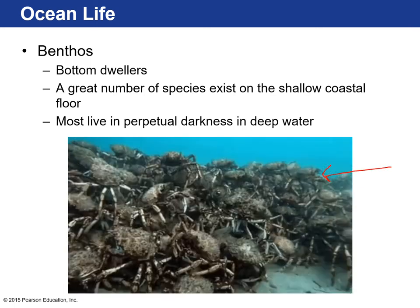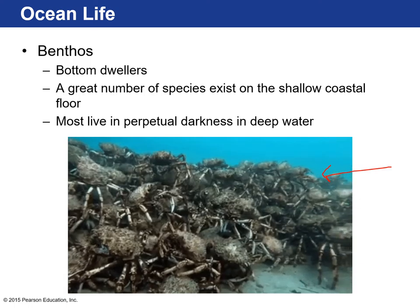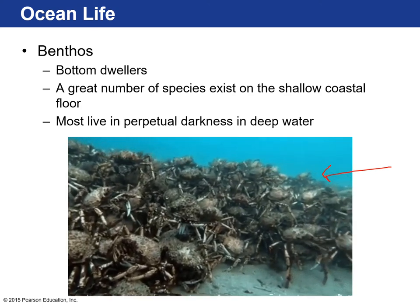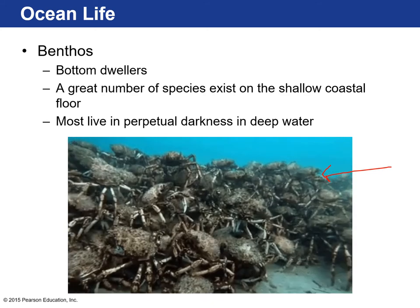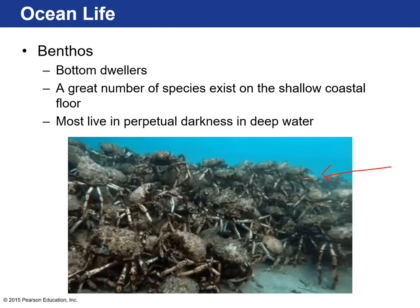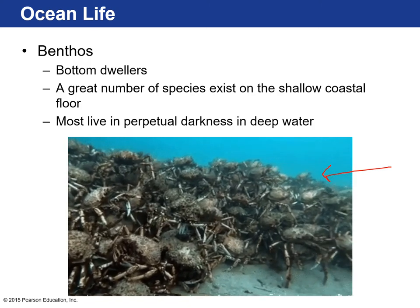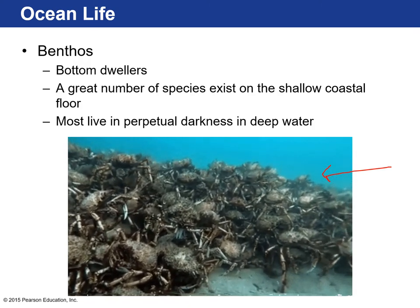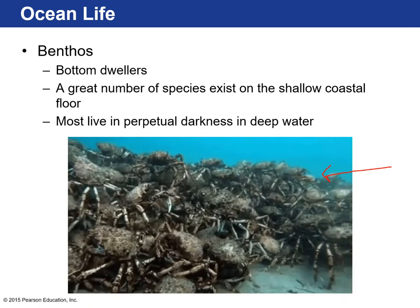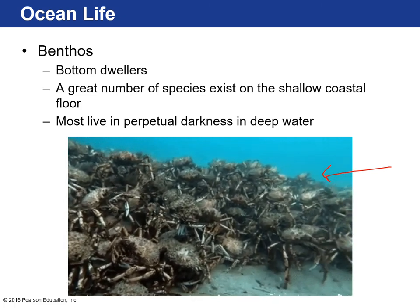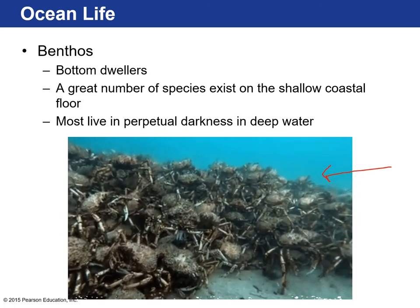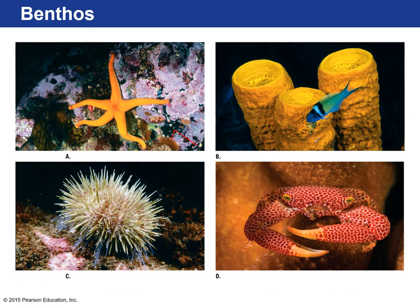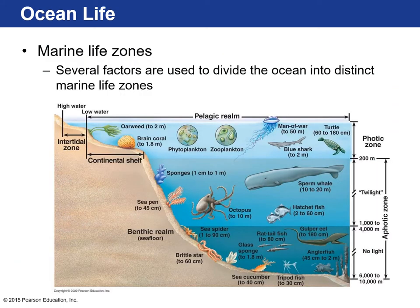Benthic marine organisms are bottom dwellers. Because the bottom of the ocean is the most varied environment, benthic organisms make up the most species in the marine environment. The majority of benthic organisms live in perpetual darkness since the sea floor is mostly below the sunlit layers of the ocean. Examples include brittle stars, sponges, corals, sea urchins, and crabs — they can be attached to a substrate like a rock or free-moving.